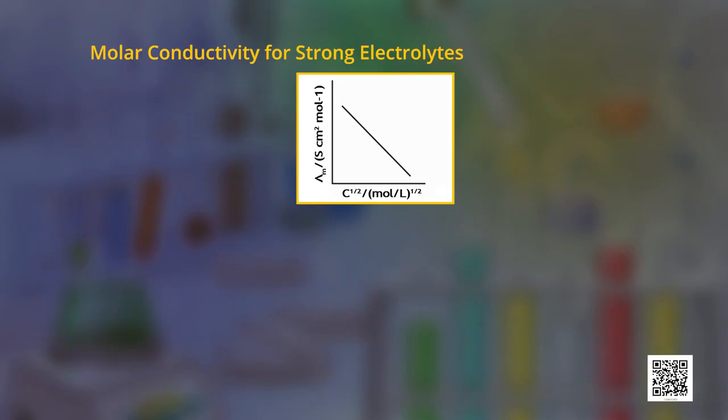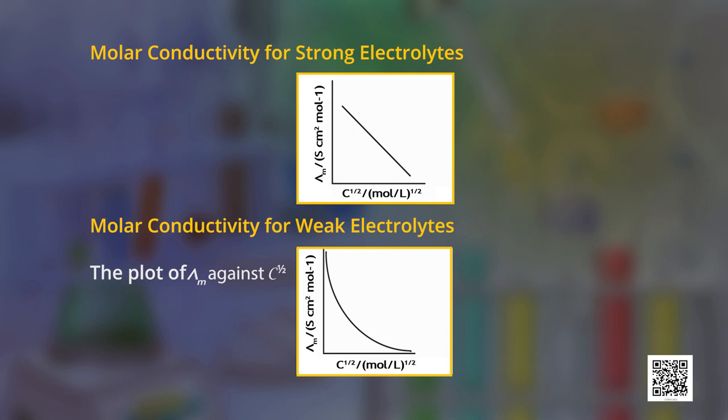This behavior can be well explained with the graph plotted for strong and weak electrolytes, between molar conductivity λm and concentration C. When concentration approaches 0, the molar conductivity is known as limiting molar conductivity. For a strong electrolyte, the limiting molar conductivity λm⁰ can be determined by extrapolating the graph, as λm varies linearly. But for a weak electrolyte, the graph obtained is a curve, so it cannot be extrapolated to zero concentration, and we cannot get the value of λm⁰ for weak electrolytes.